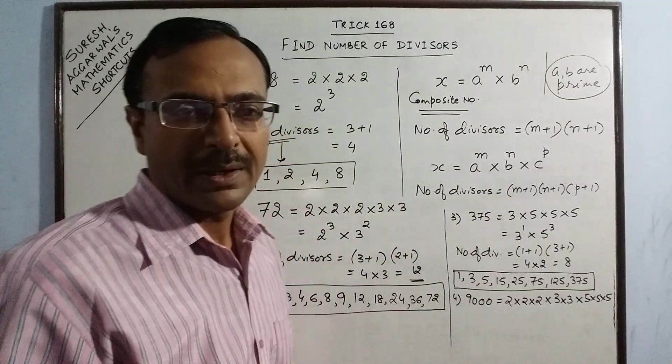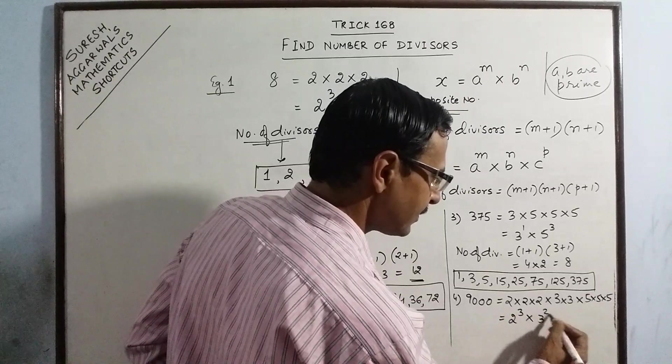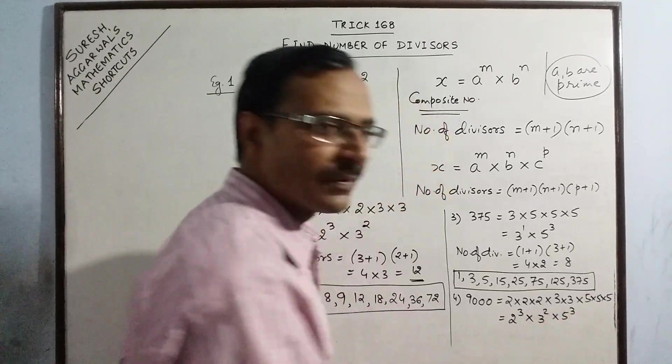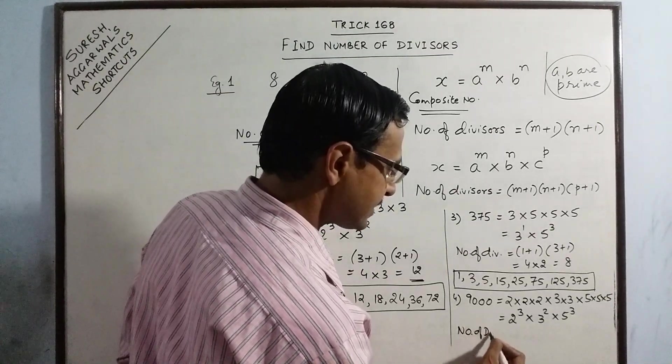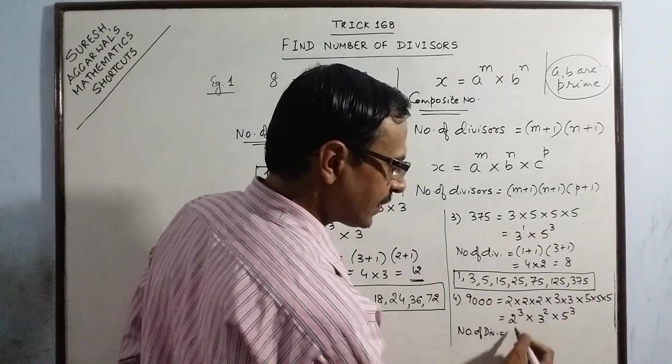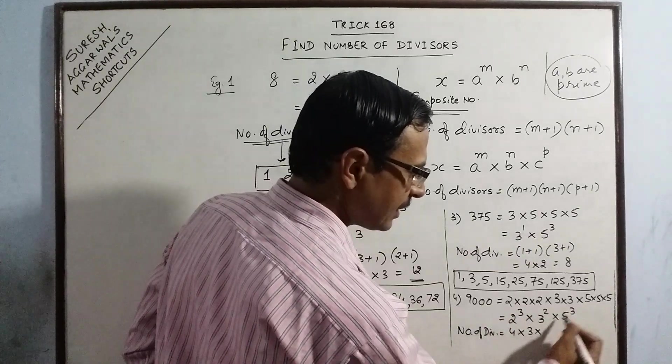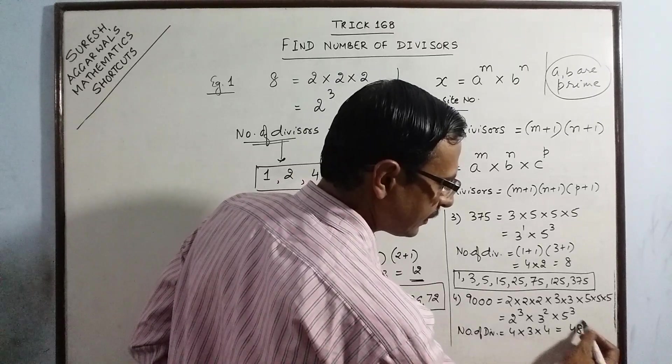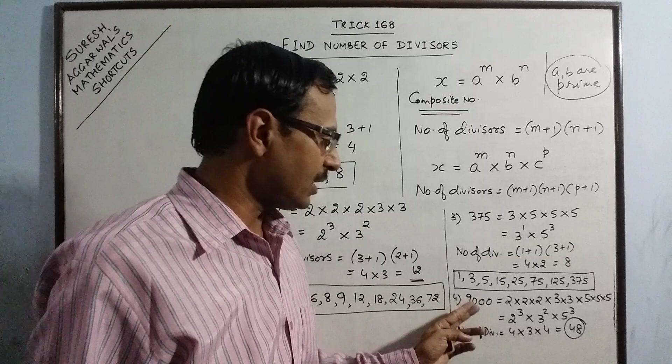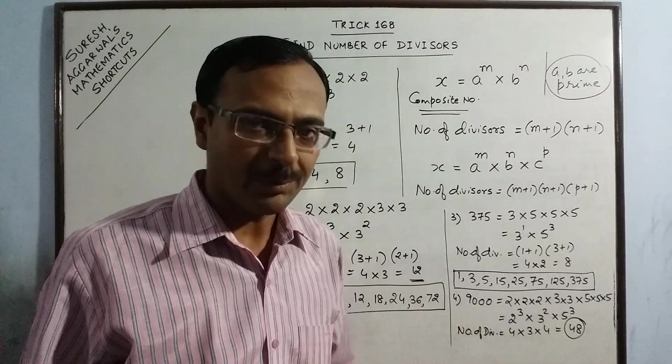So divisors can be found out by expressing them in powers first. So these are the powers and now we have the number of divisors as 3 plus 1, 4, 2 plus 1, 3 and 3 plus 1, 4. So 4 fours are 16, 3 sixteens are 48. So 9000 is exactly divisible by 48 numbers.